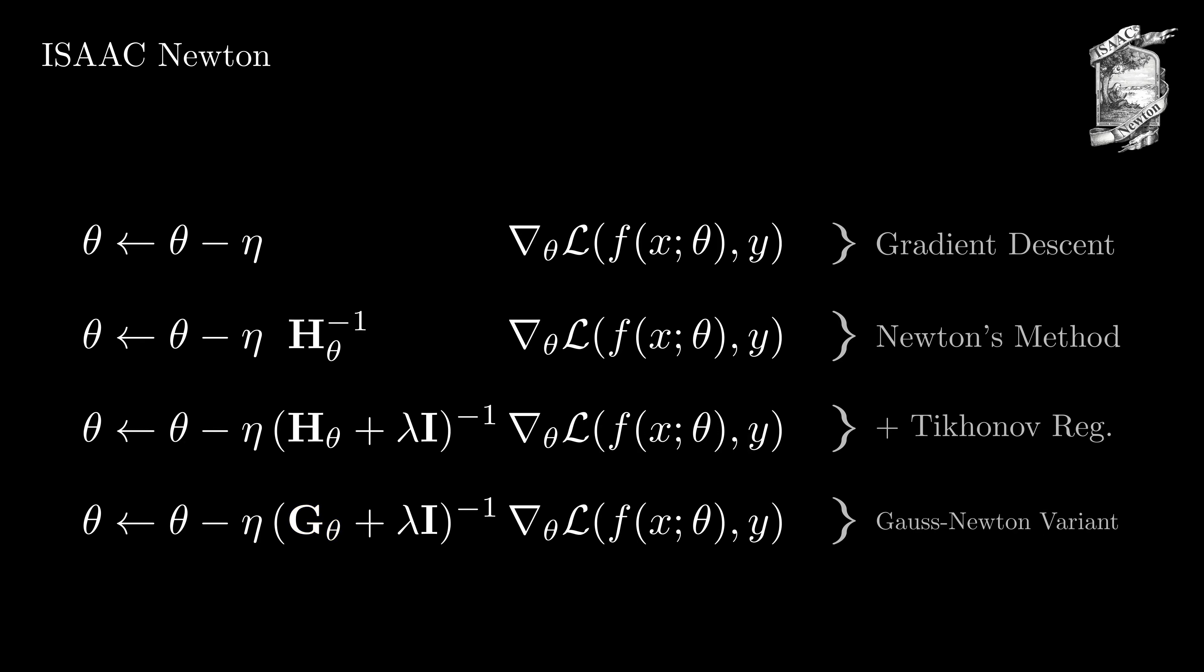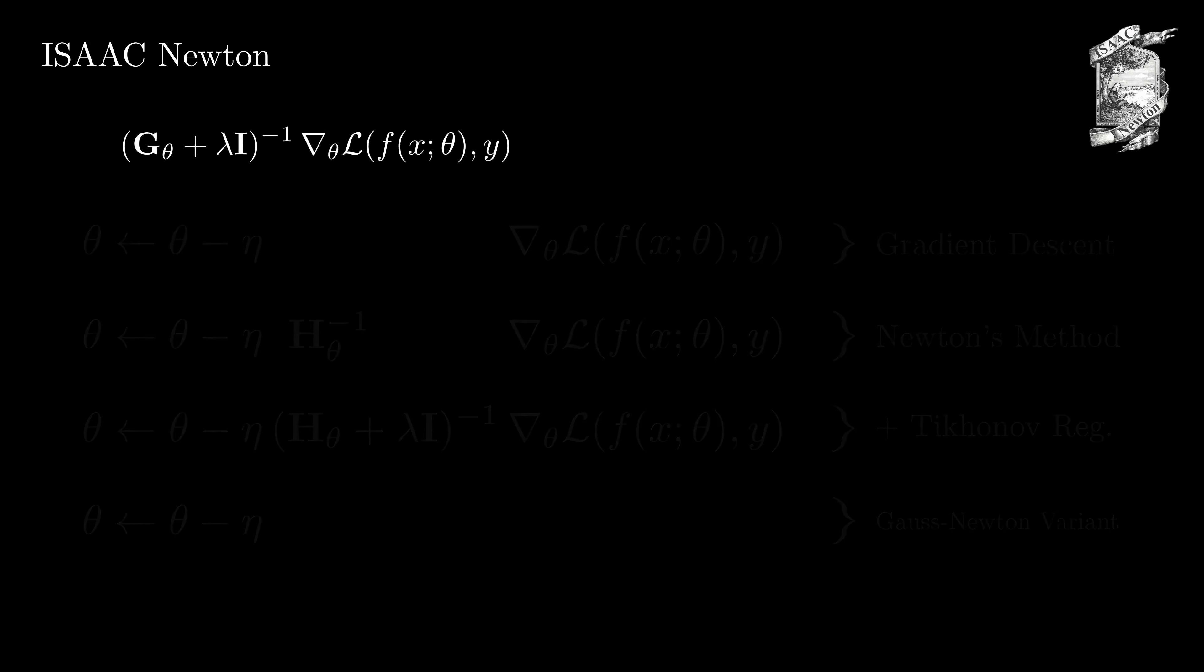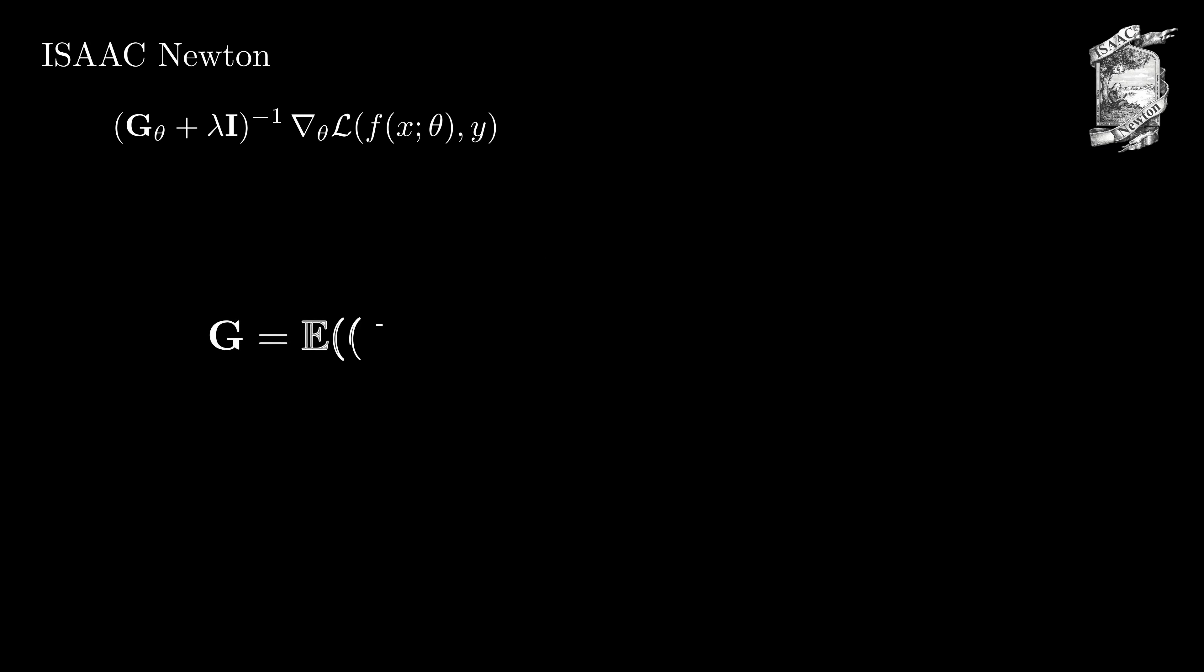Now we will consider how we can actually compute this update direction. The Gauss-Newton matrix can be defined as the expectation of the Kronecker product of outer products. Specifically, the Kronecker product between the outer product of the gradients of the loss between a prediction and a sample from the prediction with respect to the layers output z as well as the outer product of the layers input a.